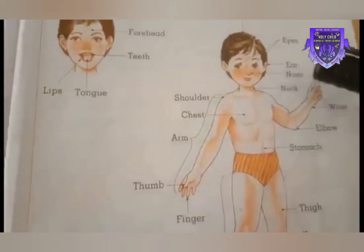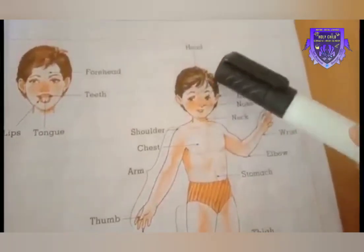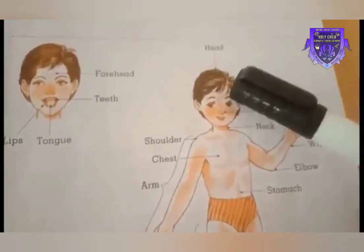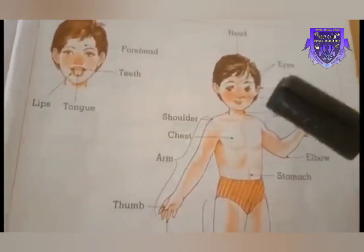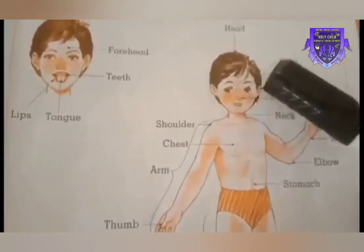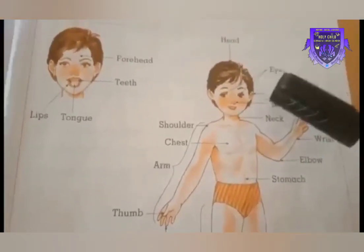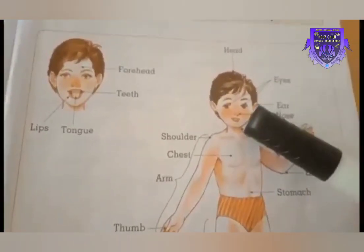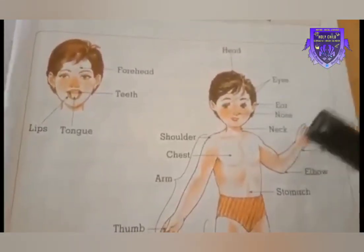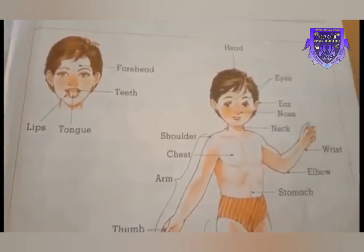Let's start with the body parts. This is the head — our head is covered with lots of hair. Then, eyes. All human beings have two eyes, two ears, and one nose. All human beings have the same body parts, but each part has a different use.